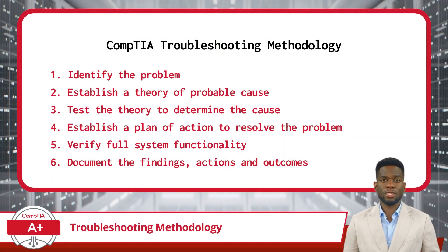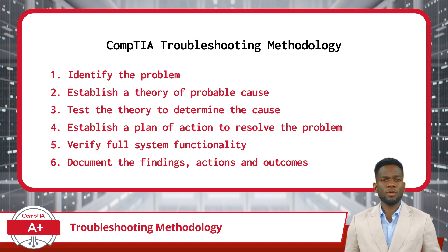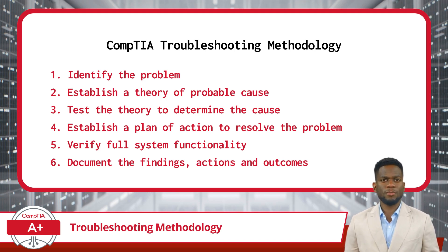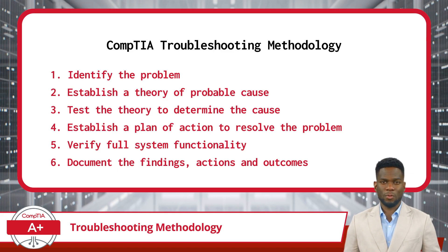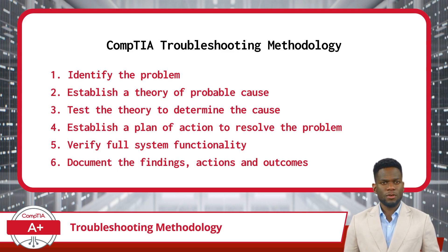This process can be broken into six steps: 1. Identify the problem. 2. Establish a theory of probable cause. 3. Test the theory to determine the cause. 4. Establish a plan of action to resolve the problem. 5. Verify full system functionality. 6. Document the findings, actions, and outcomes.